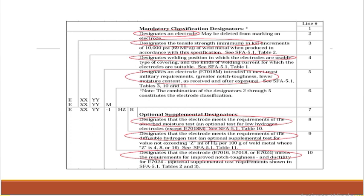'H8' designates that the electrode meets the requirement of the diffusible hydrogen test. If H8 is mentioned, a diffusible hydrogen test is required to determine how much hydrogen is present — per 100g of weld metal. 'R' designates that the electrode meets the requirement for absorbed moisture stress. So 'H8' and 'R' are optional supplementary designators, while the E-number, tensile strength, and position are the mandatory classification designators.